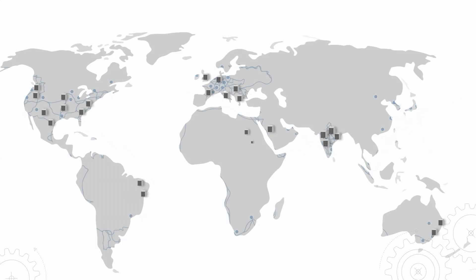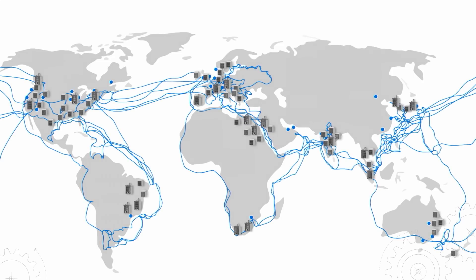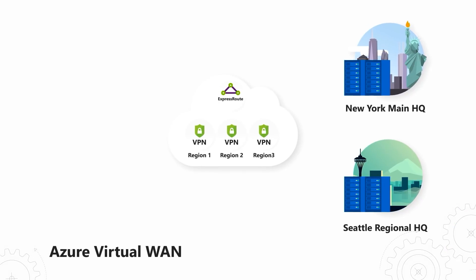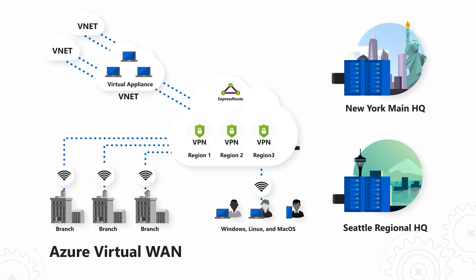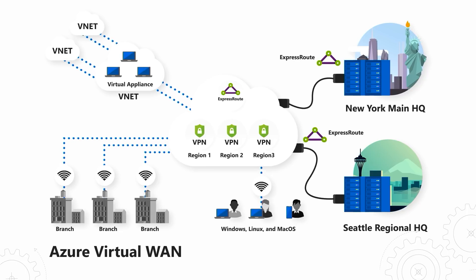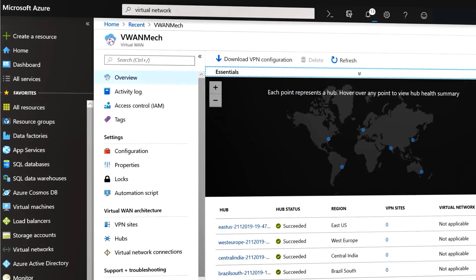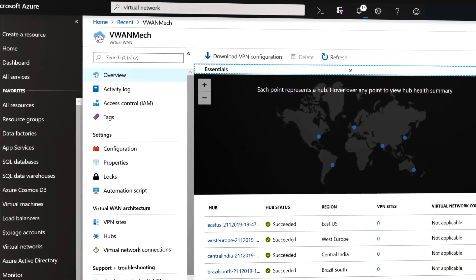One last thing I want to show you is how you can automate connections from your smaller branch sites to the Azure global network. This allows you to attach thousands of branch offices to the cloud without requiring advanced skills to configure the connection at the branch site. Think of Azure Virtual WAN as a hub capable of connecting VNets and branch sites, or even mobile users, using the internet, VPN, or via a private connection with ExpressRoute — and you can monitor them all from the Azure portal.